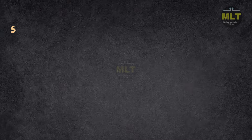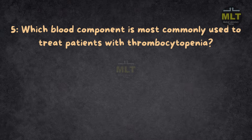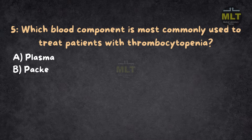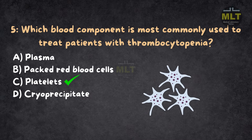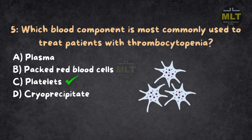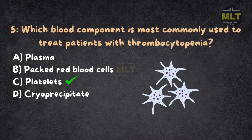Question 5: Which blood component is most commonly used to treat patients with thrombocytopenia? Option A: Plasma. Option B: Packed red blood cells. Option C: Platelets. Option D: Cryoprecipitate. Correct answer: C, Platelets. Platelets help in blood clotting and are the most commonly used component for treating thrombocytopenia — low platelet count.